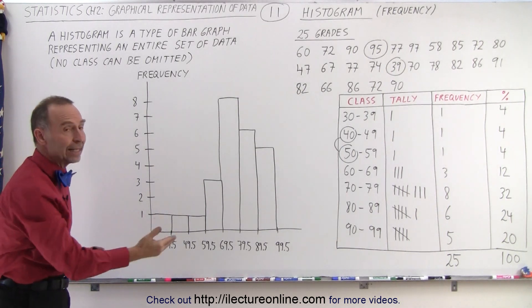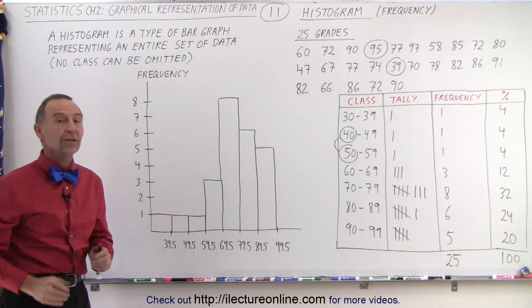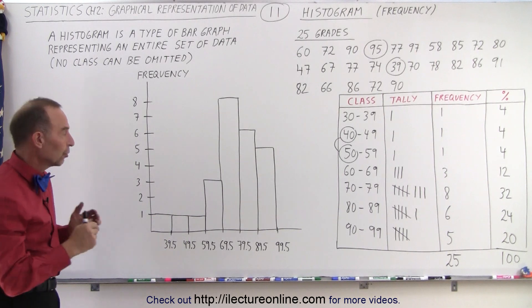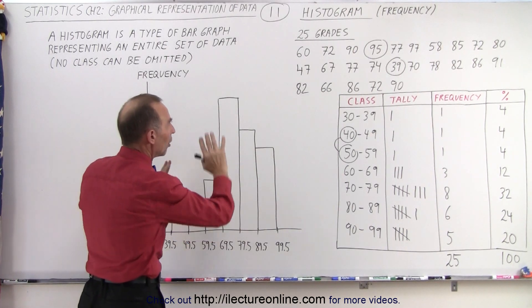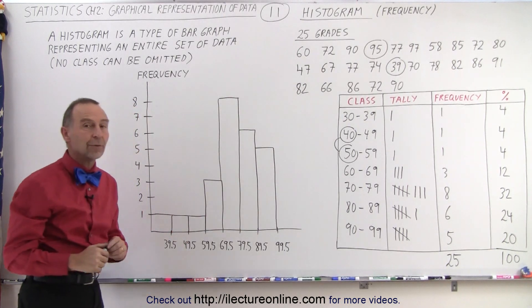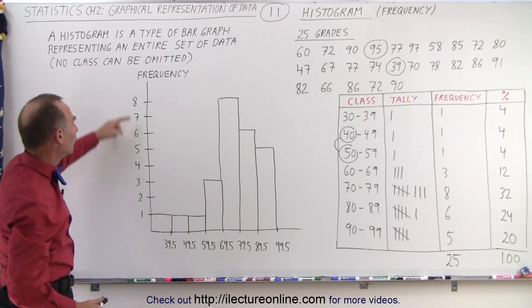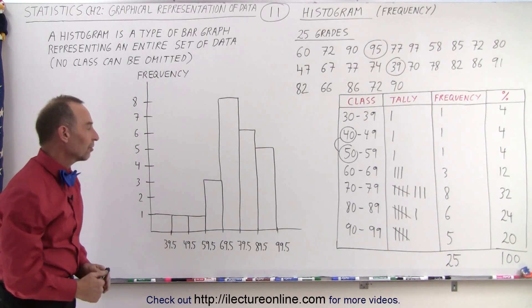Any class containing data must be represented by the histogram, which means that all the data here represents 100% of all the data that you have obtained. Now this particular one gives you the frequency of each class.